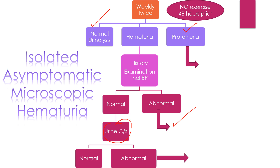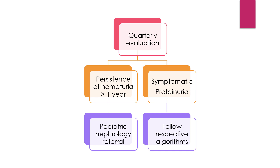If urine culture shows findings, this child becomes symptomatic microscopic hematuria — they may have hypertension or edema. If everything is normal — normal history, examination, and blood pressure — do three-monthly evaluation of history, examination, urine analysis, and blood pressure. If resolving, you are happy. If hematuria persists in isolation for more than one year, refer to a pediatric nephrologist, who will evaluate mainly for idiopathic hypercalciuria, familial hematuria, sickle cell trait, and nutcracker syndrome.